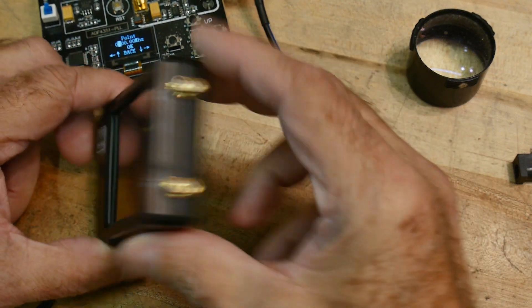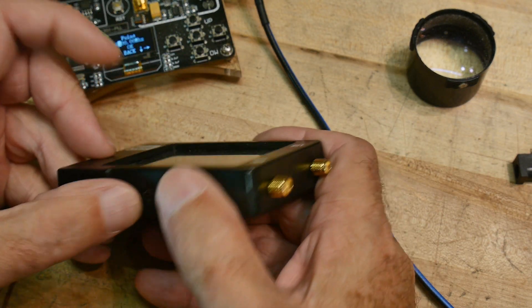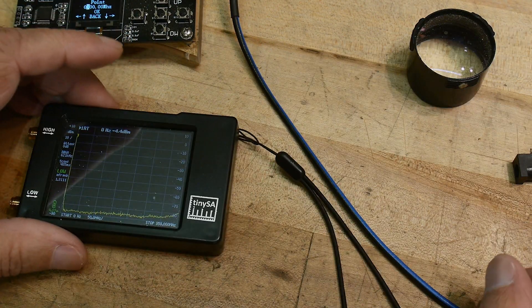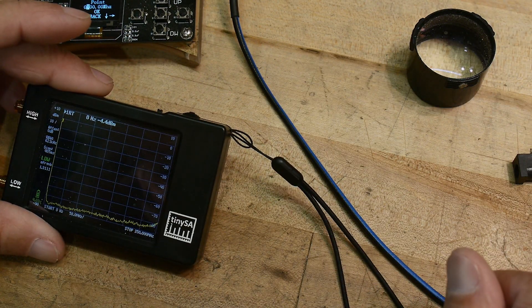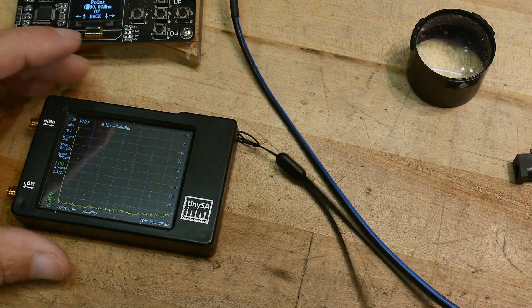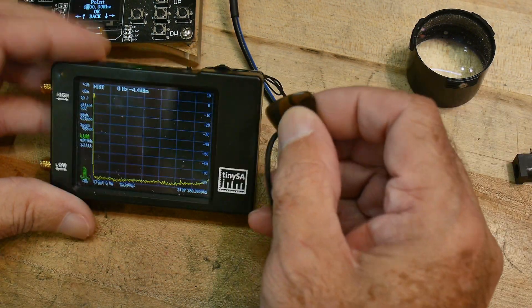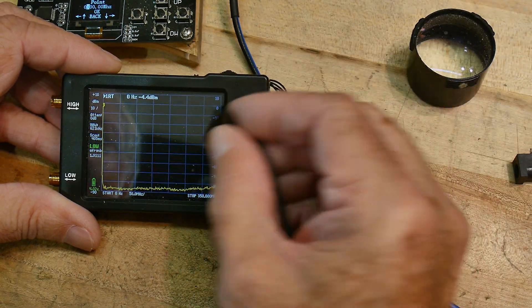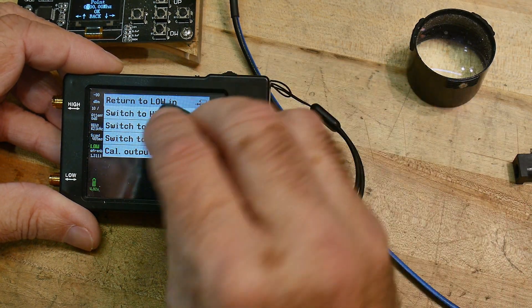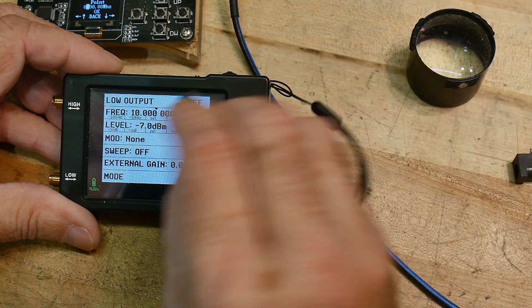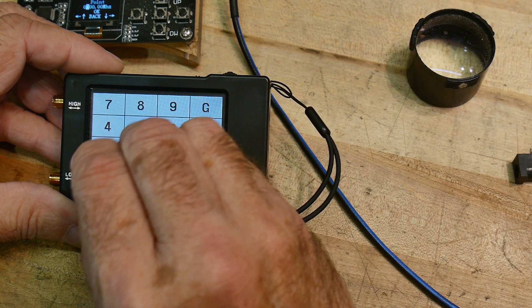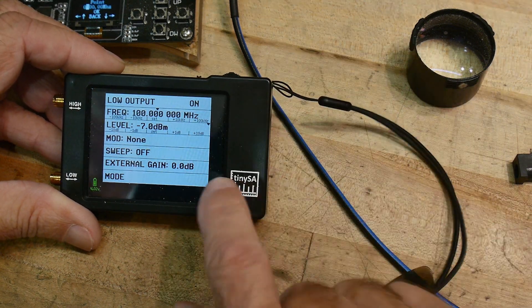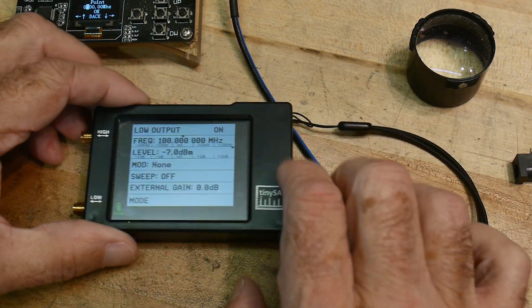Let's turn on the TinySA here. I am going to go to the menu mode. I'm going to do low out, and I'm going to set it to 100 megahertz, and I'm going to turn on. So now we have 100 megahertz coming out of the low connection here.